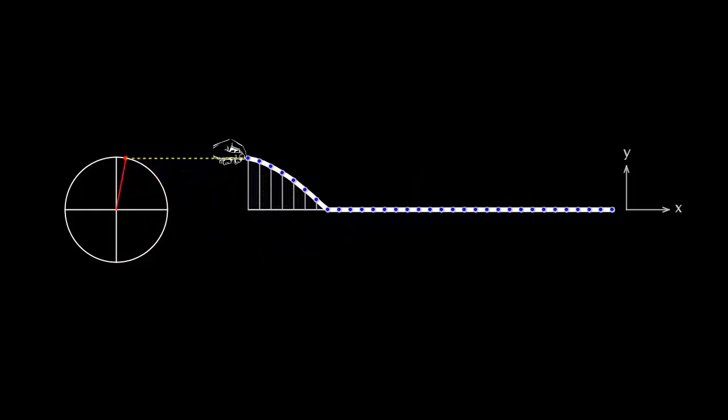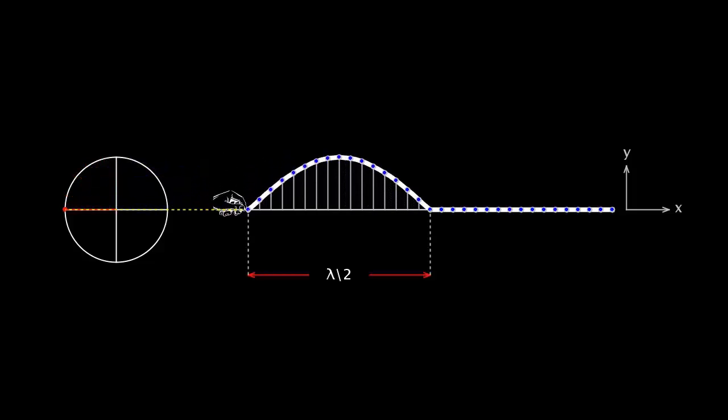If the left end of the wave completes half an oscillation, the wave advances by half a wavelength. The phase of the particle at the left end is increased by pi, and the phase of the particle about to vibrate can be assumed to be zero. The phase difference between these two particles, which are lambda/2 apart, is pi.